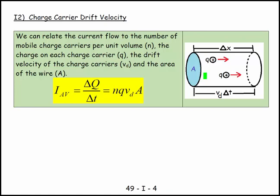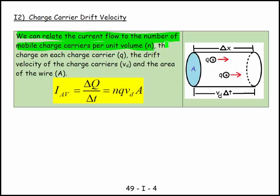We'll find that that's not actually the answer. We can relate the current flow to: n, the number of mobile charge carriers per unit volume — these are the free electrons in reality; q, the charge on each carrier, which is 1.6×10⁻¹⁹ coulombs; the drift velocity of the charge carriers, how quickly they move with the electric field; and A, the area of the wire.